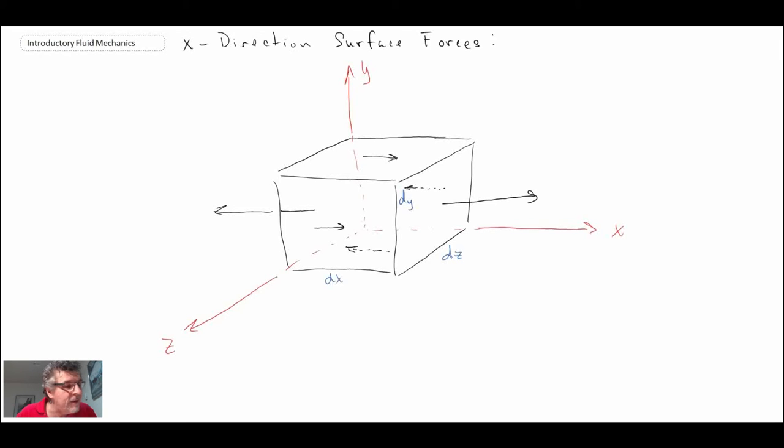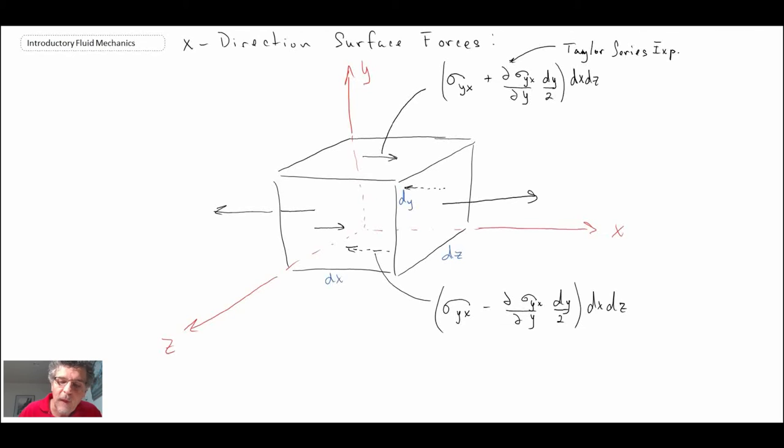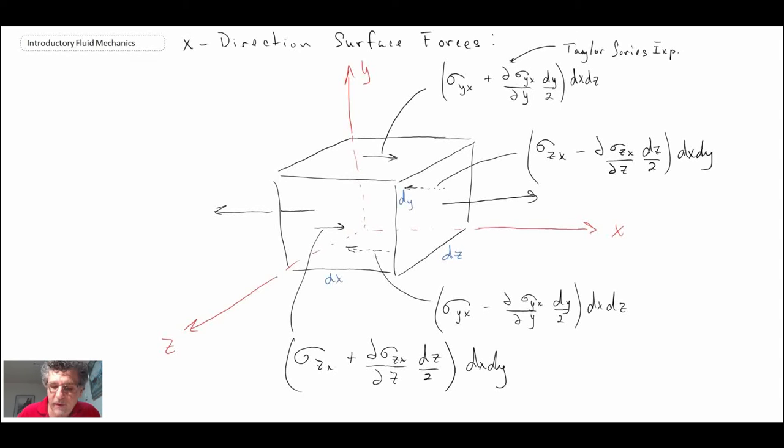What we need to do is expand those out using a Taylor series expansion. Let me just draw it out because this is going to be kind of messy. Those are the two components on the y surface, one at the bottom and one at the top. We'll expand out and express the ones on the z surface. Those are the stresses on the z surfaces in the x direction. Finally, we'll conclude with the x surfaces in the x direction.